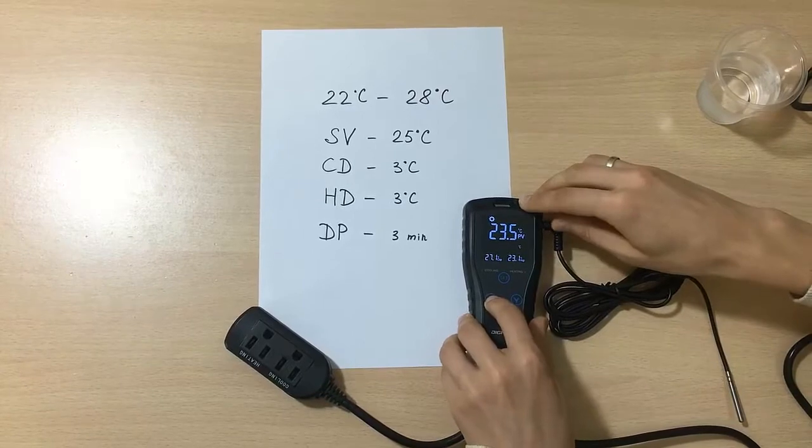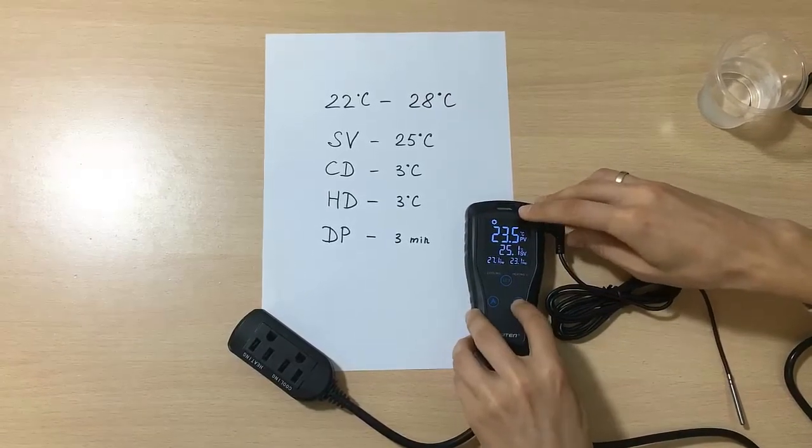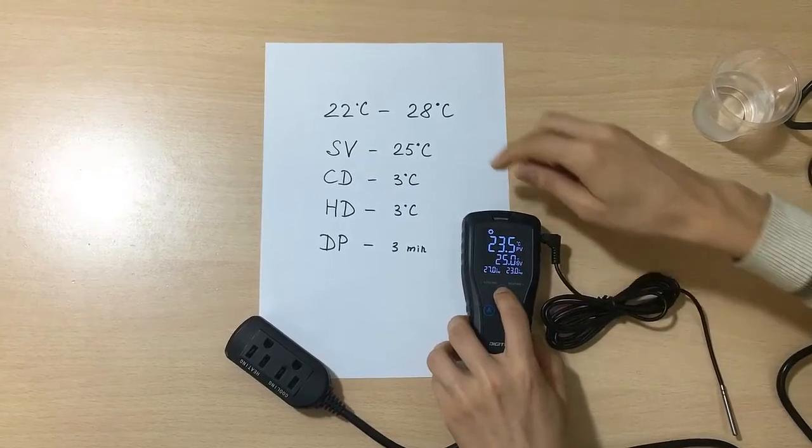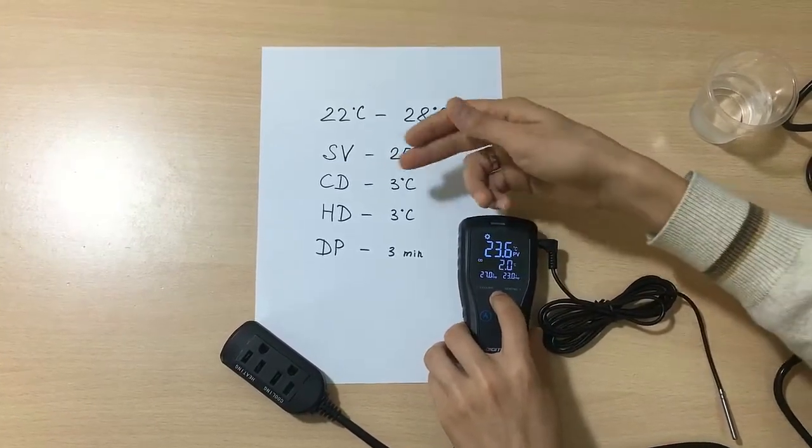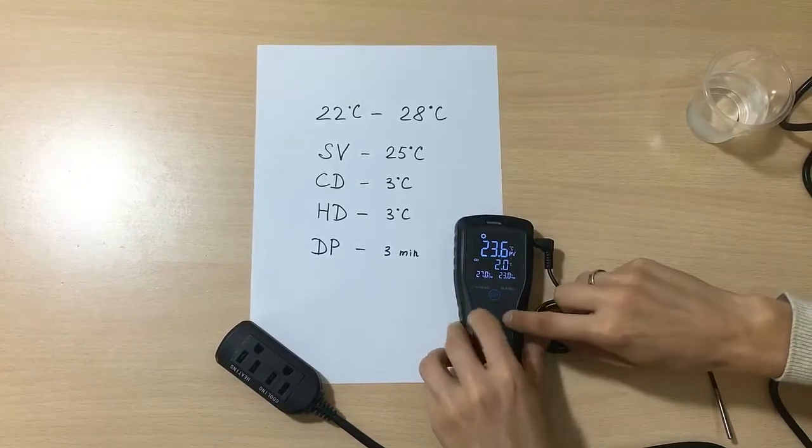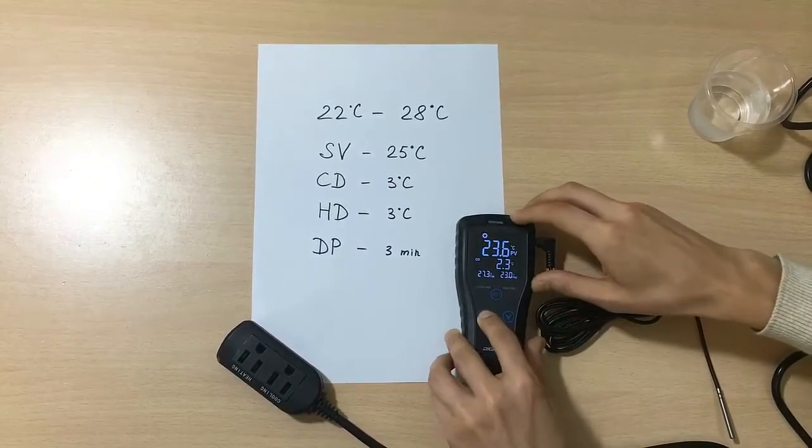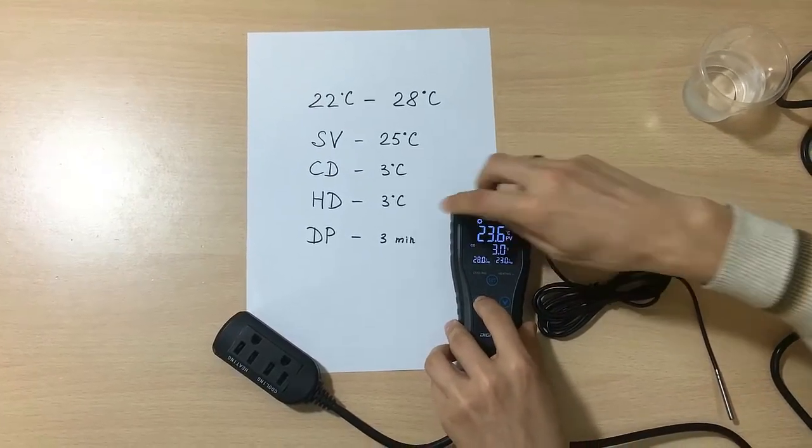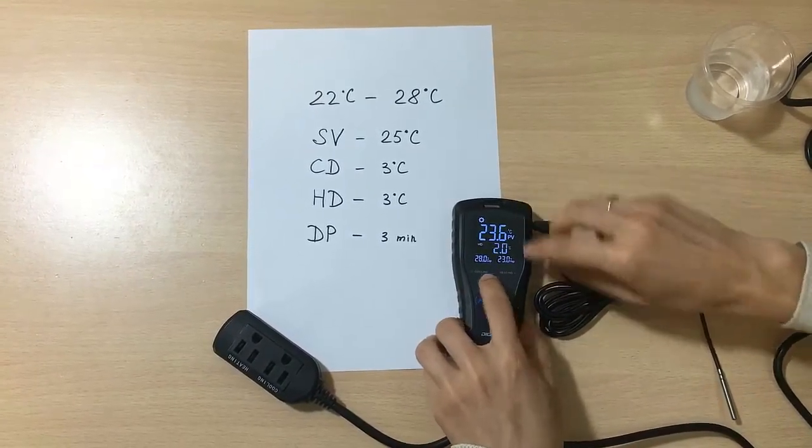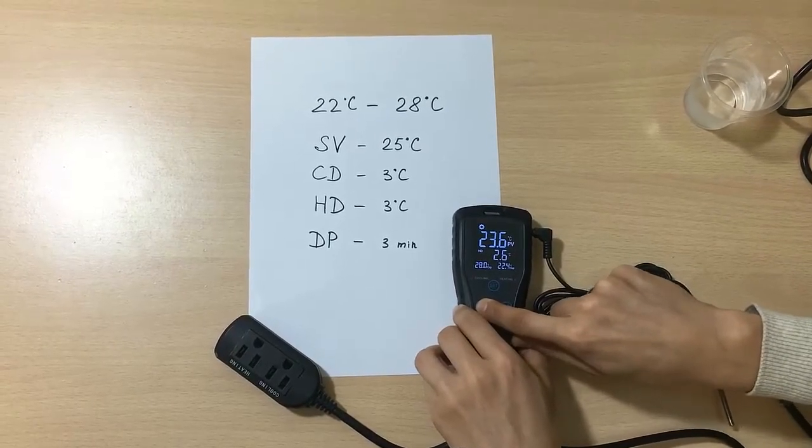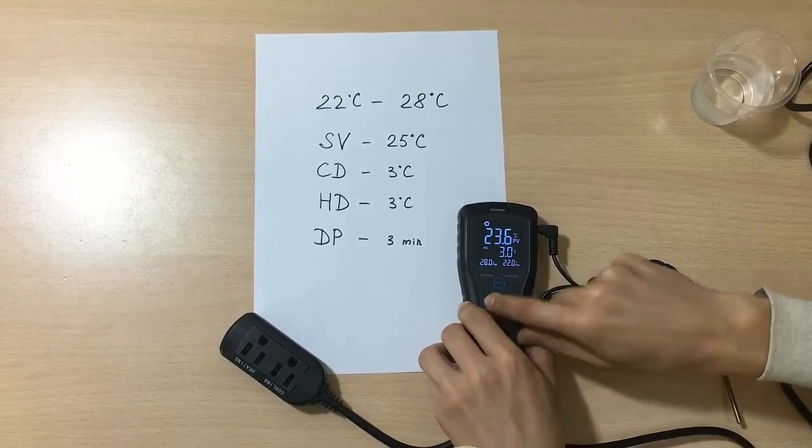We just do as we want and then we have to choose another one like CD, which is cooling differential. Now it's 2, but we have to change it to 3. So we just press the down button and we have 3 already. The next one is HD, which is heating differential. The same situation is applied with it. We just change the numbers to 3.